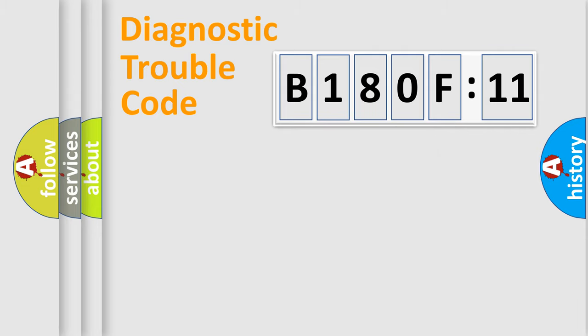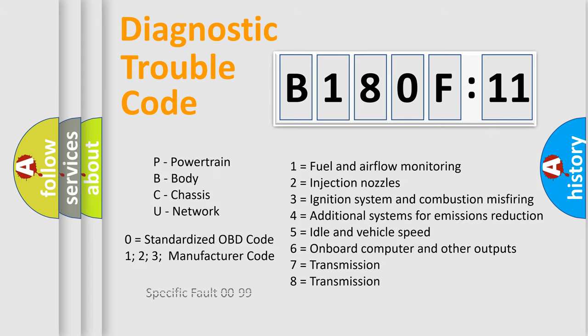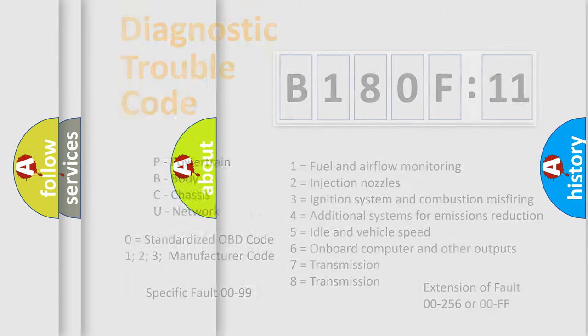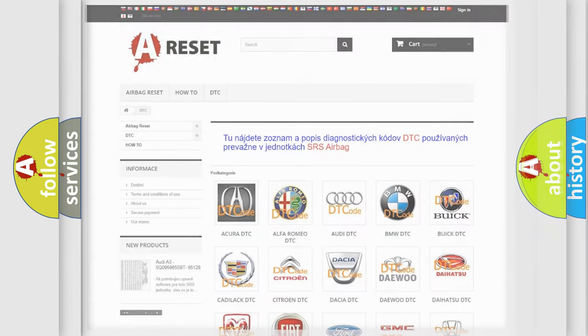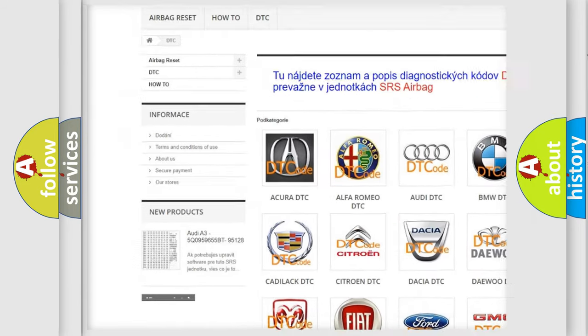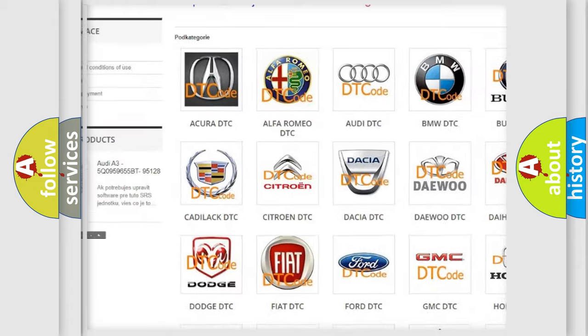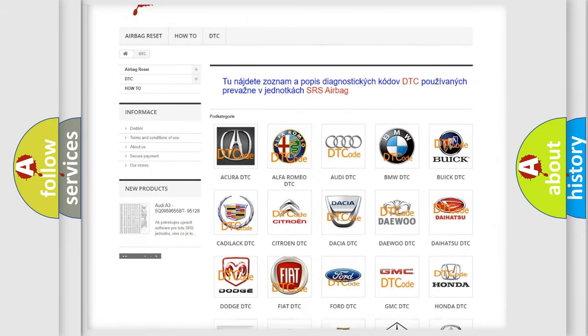Our website airbagreset.sk produces useful videos for you. You do not have to go through the OBD2 protocol anymore to know how to troubleshoot any car breakdown. You will find all the diagnostic codes that can be diagnosed in Chrysler vehicles, and many other useful things. The following demonstration will help you look into the world of software for car control units.